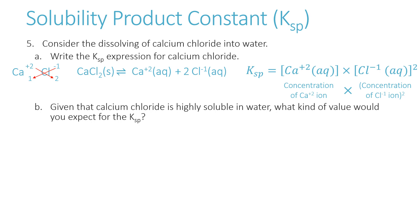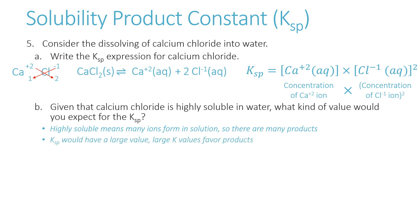Given that calcium chloride is highly soluble in water, what value would we expect for Ksp? Highly soluble means we form lots of ions — essentially all the solid dissolves, making lots of products. Since we have a lot of products, the K value is going to be large, because large values of K favor products. So Ksp is going to be a big number here because it dissolves really well.